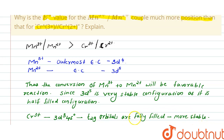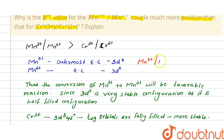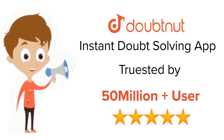The E0 value of the given couple would be more positive as its formation is favorable due to higher stability. We can see that the highly stable configuration drives the Mn³⁺ to Mn²⁺ conversion, so the E0 value for the Mn³⁺/Mn²⁺ couple is positive.